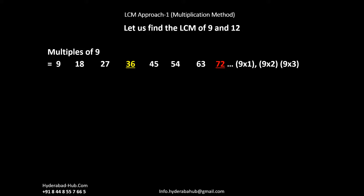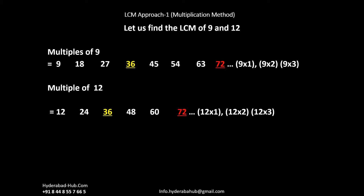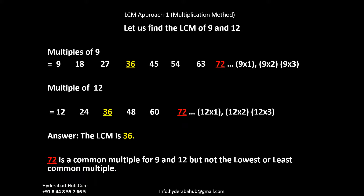We find common multiples between the two sets. 36 and 72 are common between the multiples of 9 and 12. 36 is the lowest common multiple of 9 and 12. Note that although 72 is also a common multiple of 9 and 12, it is not the lowest common multiple.